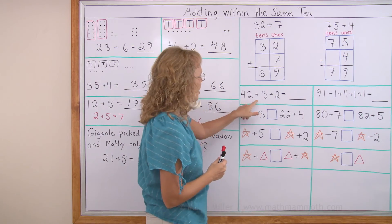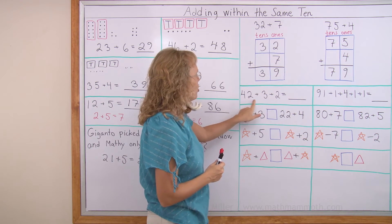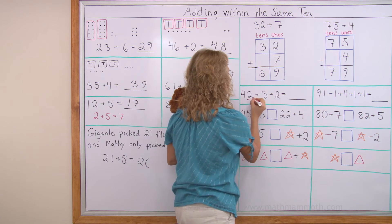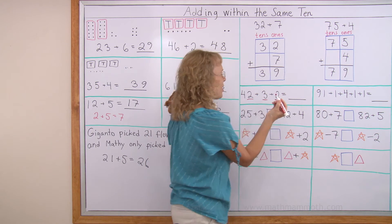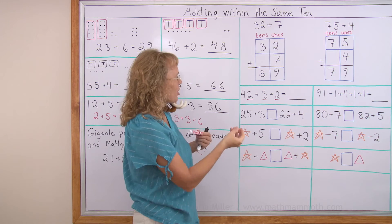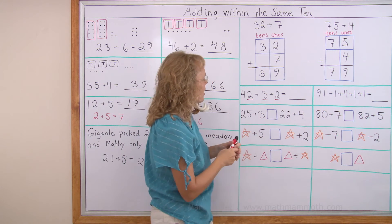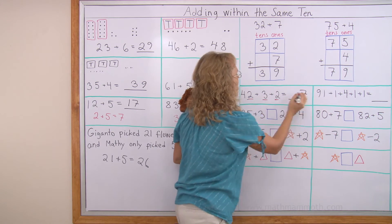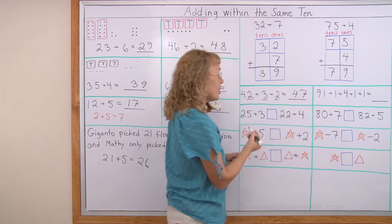Over here we have 3 numbers to add. 42 plus 3 plus 2. Again we have a helping problem. Think of those little dots. 2 little dots and 3 and 2 little dots. And add those first. 2 plus 3 plus 2. How much is that Mathie? 7. Yeah, he knows. That's 7. So these 4 tens are not going to change. They are there. 47.